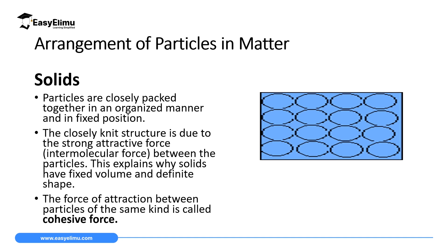In solids, particles don't move — they only vibrate within their fixed position. The reason is that these particles are attracted by a very strong cohesive force. If you consider a particle, it is attracted from all sides by a very strong force of attraction, so all particles are close to each other with no space to move. What they can only do is vibrate within their fixed position, and this explains why solids have a fixed volume and definite shape.